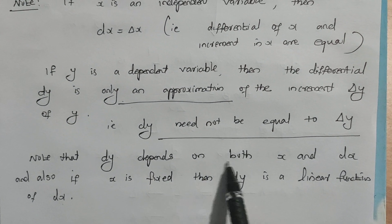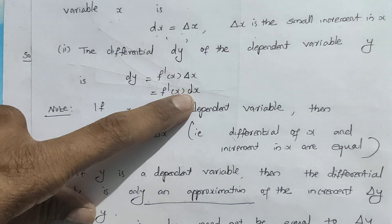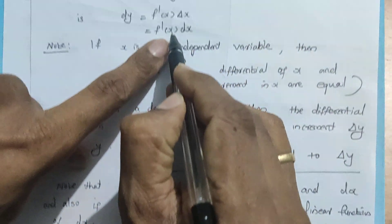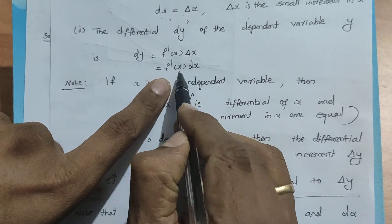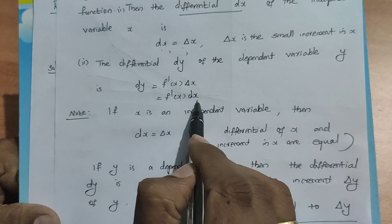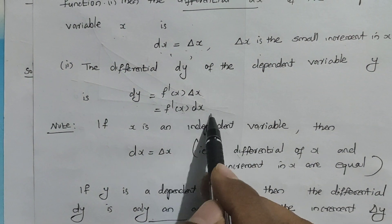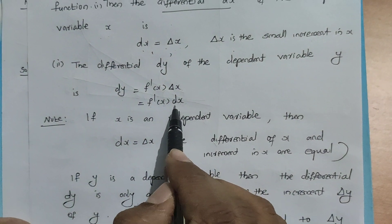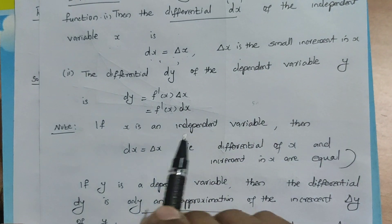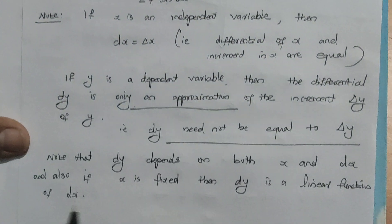Note that dy depends on both x and dx: dy equals F dash of X into dx. If x is fixed at a value, then F dash of x is a constant, so dy equals a constant times dx. Since dx appears with power 1, dy is a linear function of dx.